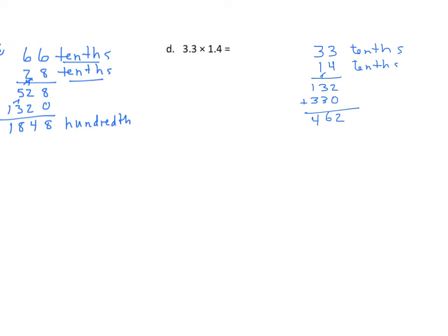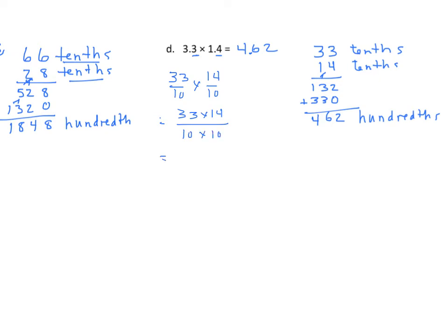And this is easy — we're multiplying by 1. Find the sum of our partial products, and we get 462 hundredths. Noticing that we have one decimal in the first factor and one in the second factor, meaning that we have two decimal places. So we'll insert that decimal between the four and the six. In fractional form: 33 tenths times 14 tenths equals 33 times 14 over 10 times 10. We find our products — we have 462 over 100 — and of course that's 4 and 62 hundredths.